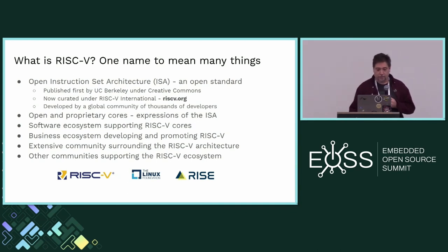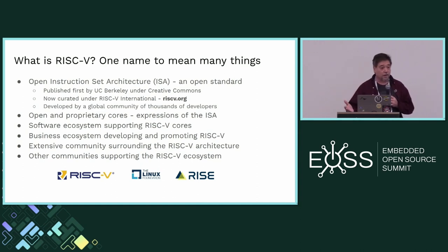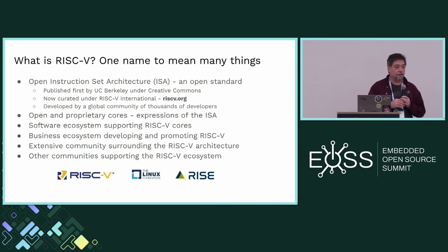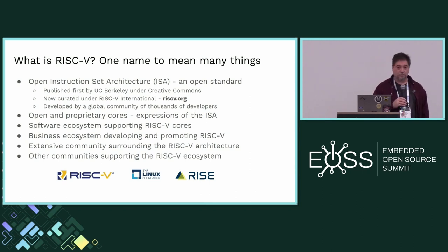What do we mean when we talk about RISC-V? We use one name to mean many things. It's an open instruction set architecture primarily. RISC-V came from UC Berkeley in about 2010 — I think that's when it was first published — and formed as an open source foundation in 2015.